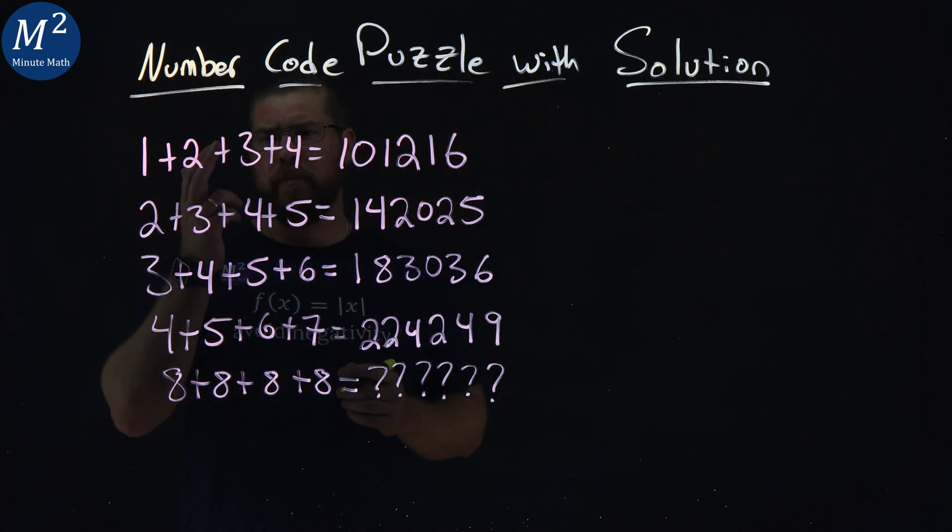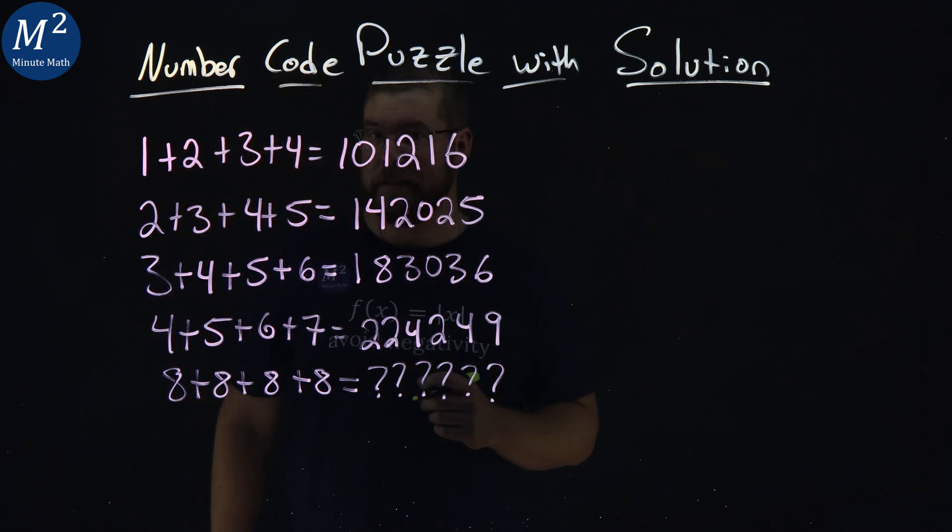Our puzzle is this. 1 plus 2 plus 3 plus 4 equals 101216.